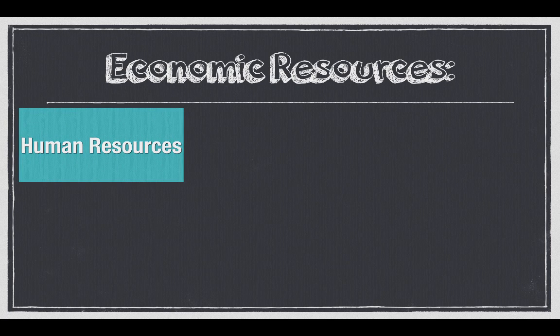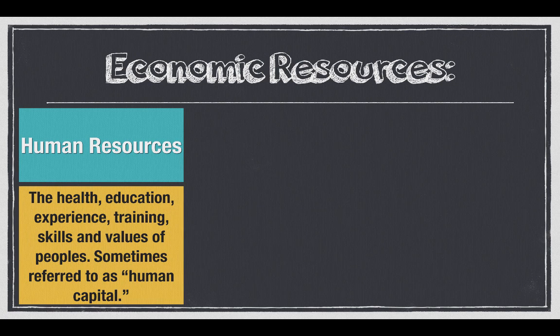When we talk about resources, I want to make sure we remember the three types. The first is human resources — the health, education, experience, training, skills, and values of people. This is anything that a person adds to a process. If I think on a problem for five minutes, my human resource has been used on that problem. You guys are actually all human resources, and right now you're gaining education and training — maybe showing up on time and going through the motions a little bit.